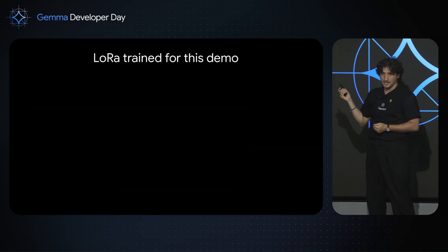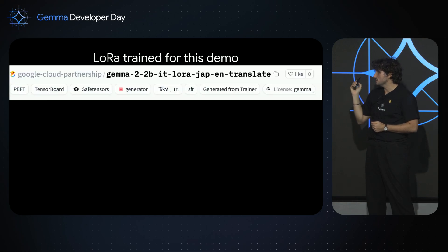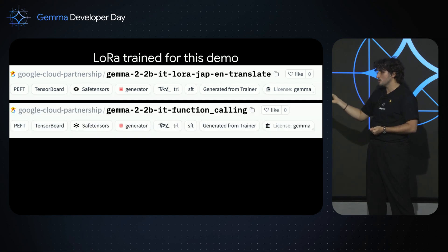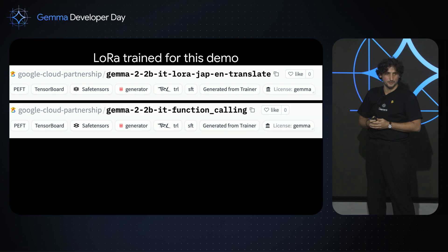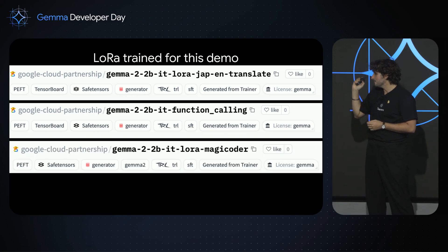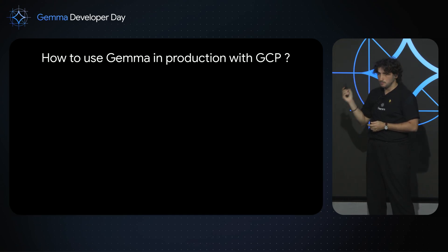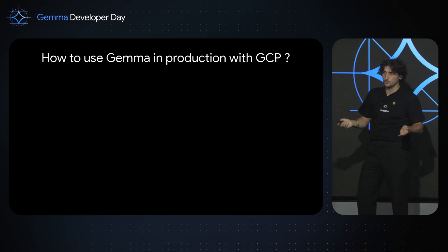For this demo, I trained a few models. Since I'll be staying in Japan for a little bit, I trained a LoRA adapter on Gemma 2.2b that does Japanese-to-English translation, a function calling adapter trained with yen-to-euro conversion, and your classical coding expert and SQL expert. So how do you deploy that into GCP? Because here, you're Google developers.